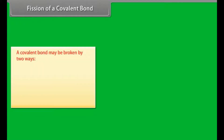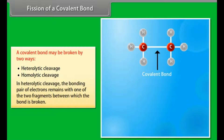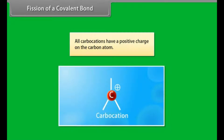A covalent bond may be broken by two ways: heterolytic cleavage and homolytic cleavage. In heterolytic cleavage, the bonding pair of electrons remains with one of the two fragments between which the bond is broken. All carbocations have a positive charge on the carbon atom.